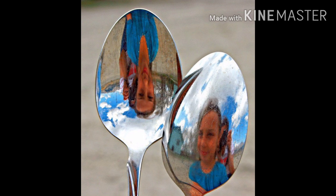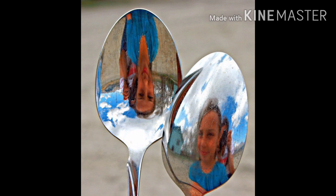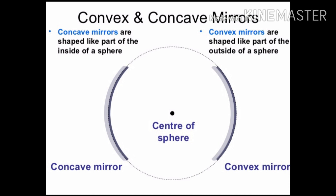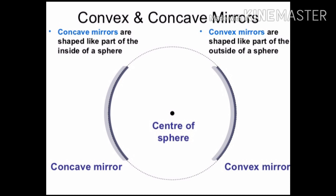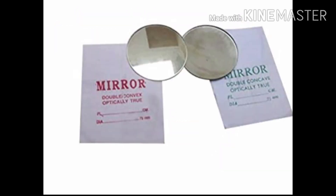We shall now study about spherical mirrors in some detail. The reflecting surface of a spherical mirror may be curved inwards or outwards. A spherical mirror whose reflecting surface is curved inwards, i.e. faces towards the center of the sphere, is called a concave mirror. And a spherical mirror whose reflecting surface is curved outwards is called a convex mirror. You may note in these diagrams that the back of the mirror is shaded.